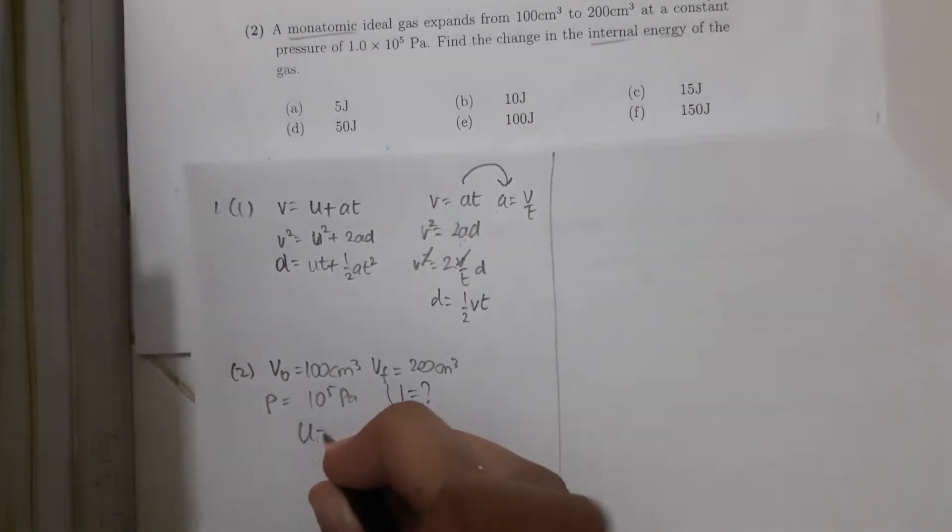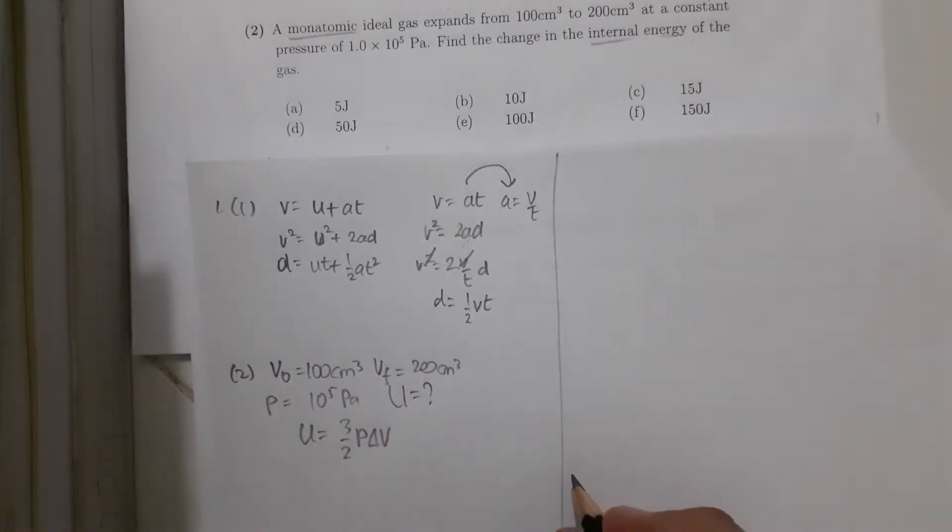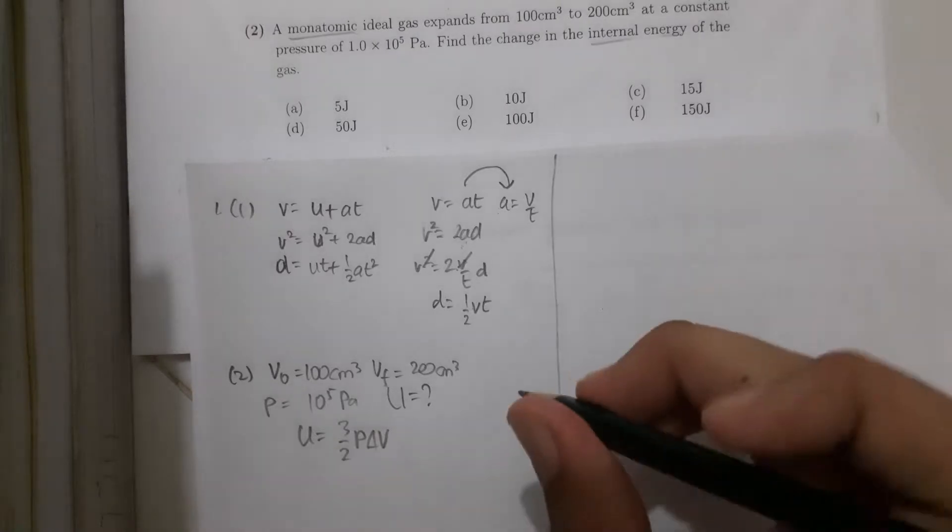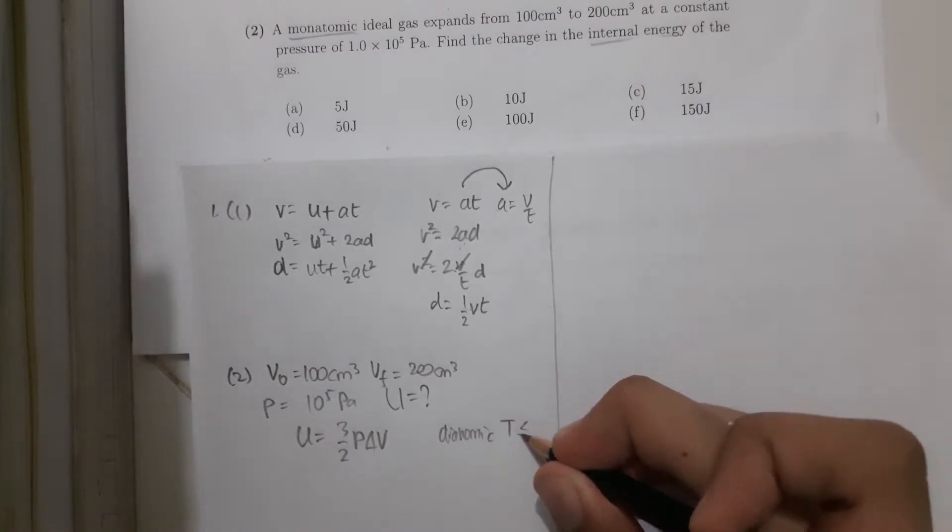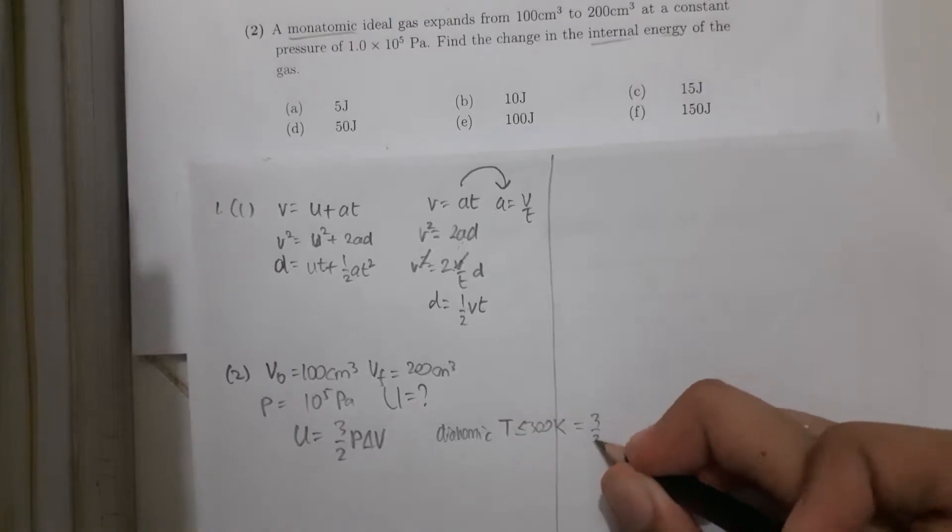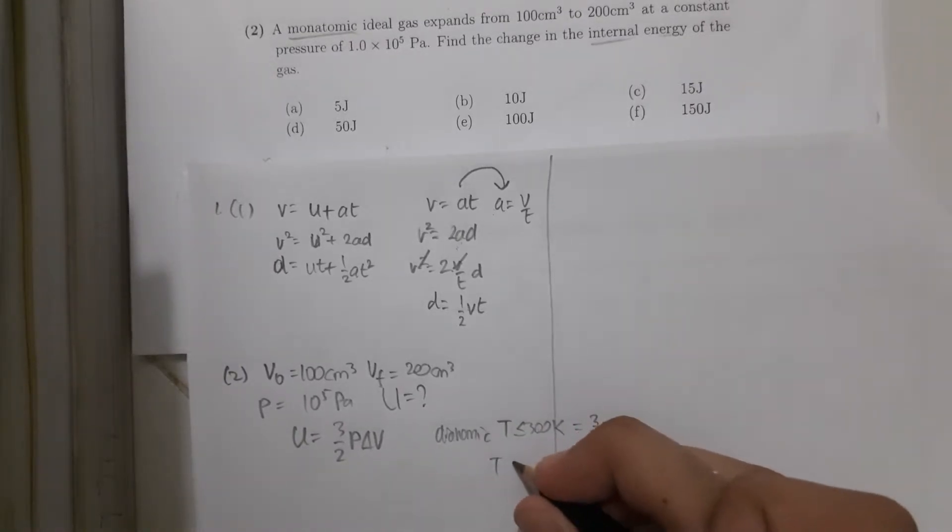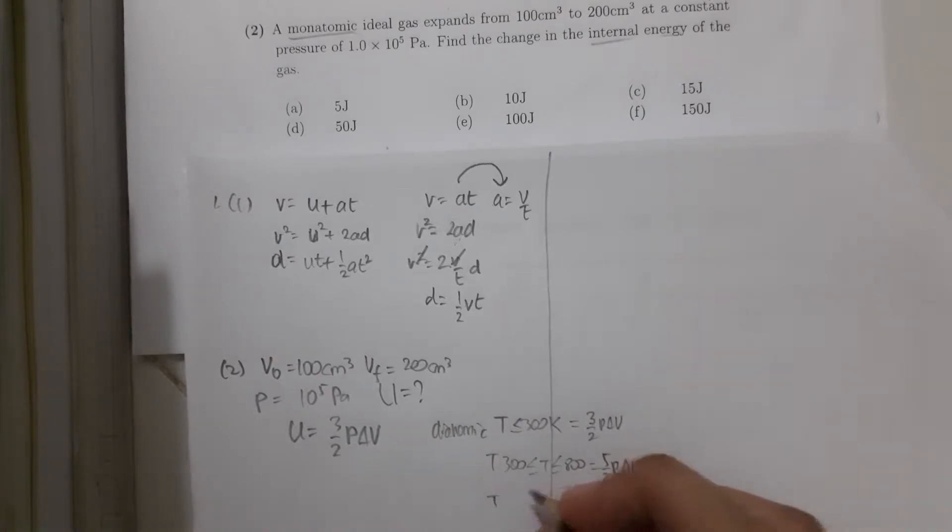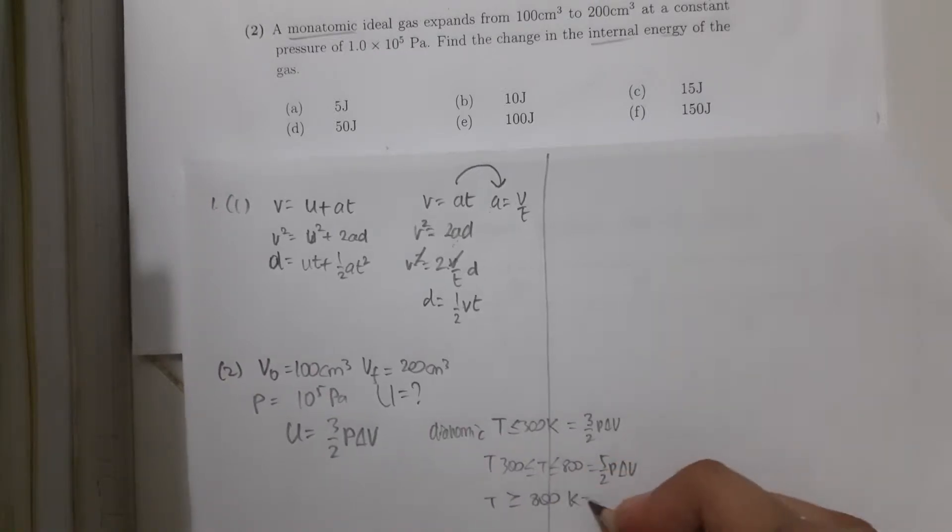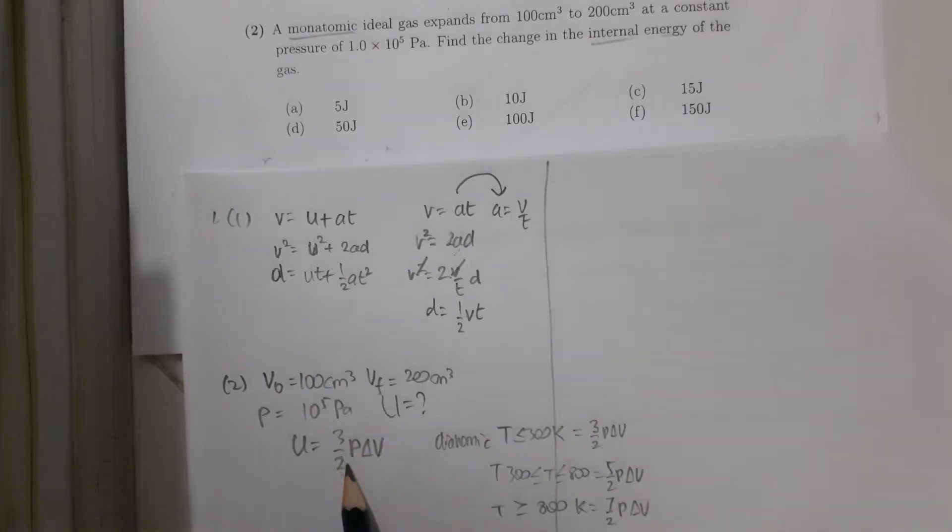And if you wonder about the other type of gases. If the gas is diatomic with T less than 300, then the formula is 3 over 2, p delta v. If the temperature of the diatomic gas is between 300 and 800, this is equal to 5 over 2, p delta v. If the temperature is greater than 800 Kelvin, this is 7 over 2, p delta v. So I just want to say the types of gases that could happen. But because we are discussing monoatomic, then 3 over 2, p delta v.